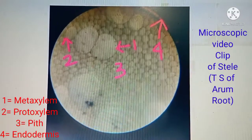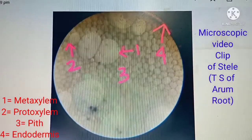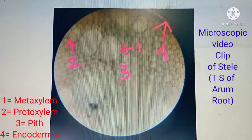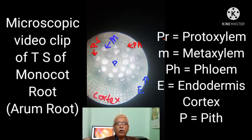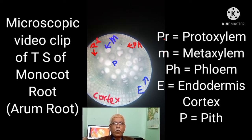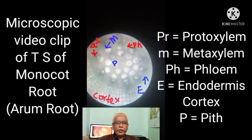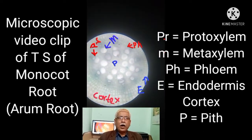In the microscopic image of the stele: metaxylem is identified as one, protoxylem as two, pith as three, and endodermis as four. This is a video clip of a TS of Arum root taken from a microscope under low power. Cortex and stele are well differentiated; components of stele such as metaxylem, protoxylem, phloem, and endodermis are clearly visible as identifying features.